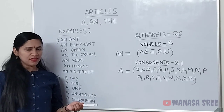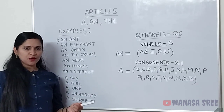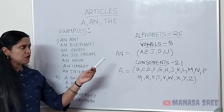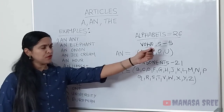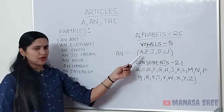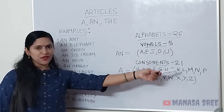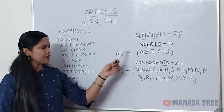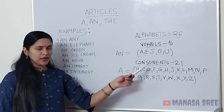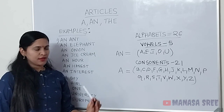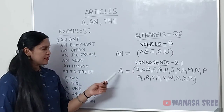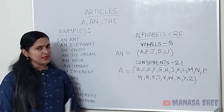Friends, words na naavu vowels, consonants, sounds ge articles na use maatthi vi. Alphabets — letters — 26 alphabets. Vowels: 5. Consonants: 21. Vowels are a, e, i, o, u. E sounds bandre — vowel sound bandre — 'an' use maatthi vi. Remaining letters — consonant sound bandre — 'a' use maatthi vi. Ok na friends? Examples nao da na.